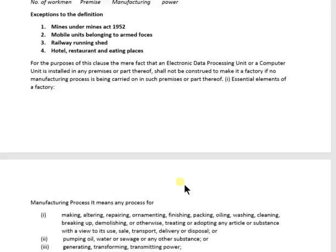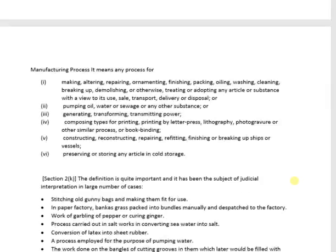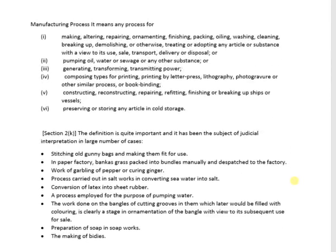We had seen the definition of the factory, and one important thing in it was that there should be some manufacturing going on, so we must have knowledge of what manufacturing is. Here is a list of things which fall within the manufacturing process — some of them are like storing any article in cold storage, transport, delivery, making alterations, reparations, pumping oil, water, or CVH, generating, transforming or transmitting power. You can go through the list of what constitutes a manufacturing process.